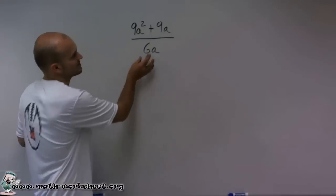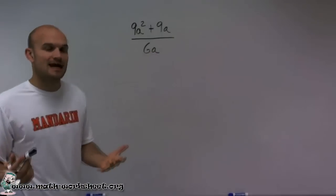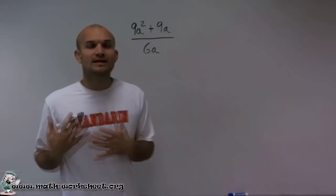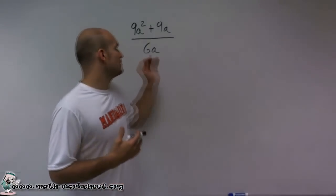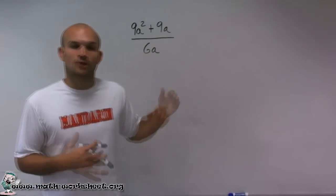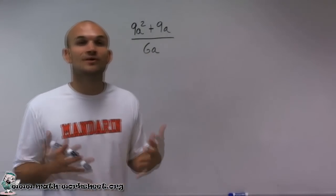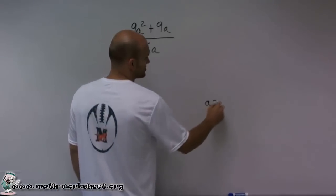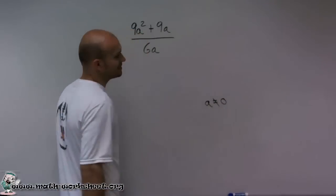What I notice is that I have 6 times a in my denominator. The one important thing we need to remember is we can never divide by 0. So how can 6a become 0? The only way that 6a is going to become 0 is if a equals 0. So I'm going to write down in my answer, a cannot equal 0.